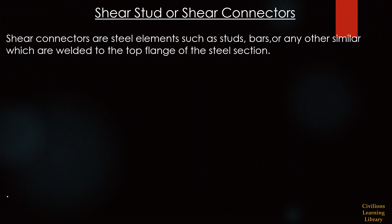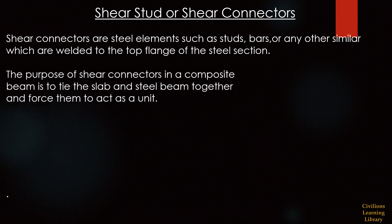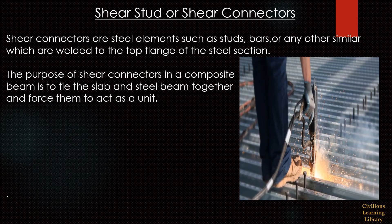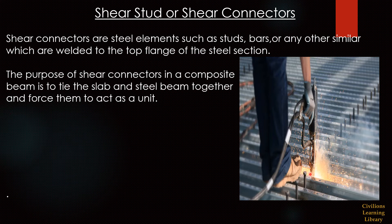Shear connectors are generally made up of steel elements such as standard studs, bars, or any other similar elements which are welded to the top flange of the steel section. As shown in the image, below is the steel beam, over which the decking seat is placed. Using a shear stud gun, we can place the shear stud over the top flange of the steel section.